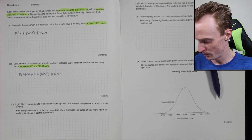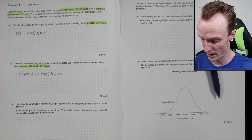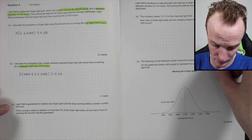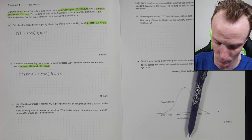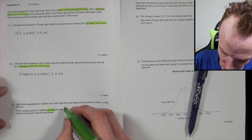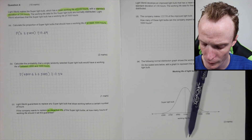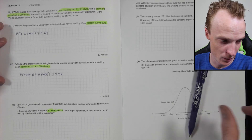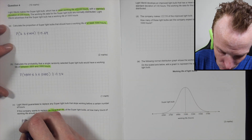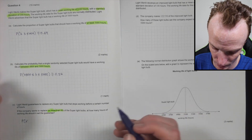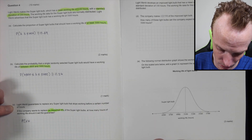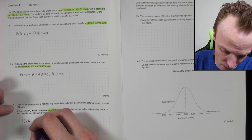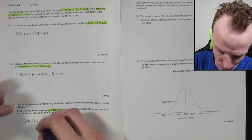The Super Light Bulb guarantee replaces any bulb that stops working before a certain number of hours. The company wants to replace no more than eight percent of Super Light Bulbs — 'no more than' is a key phrase here. We need to find how many hours to set the guarantee. We're looking for the probability that X is less than K, where that area equals 0.08.